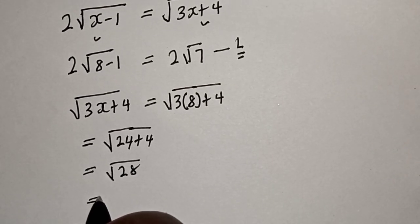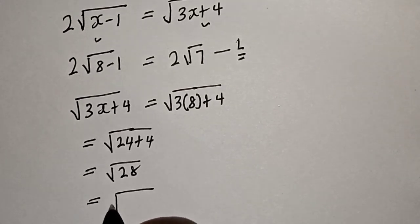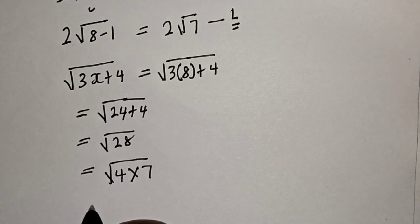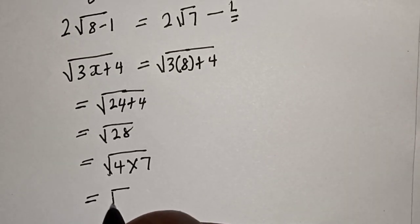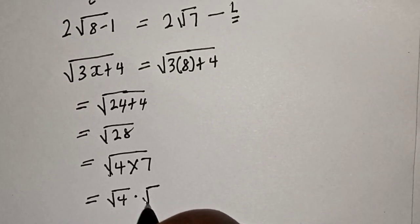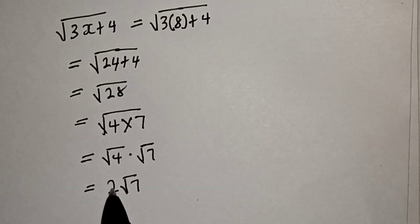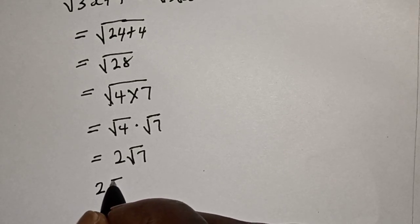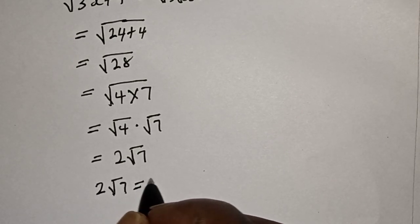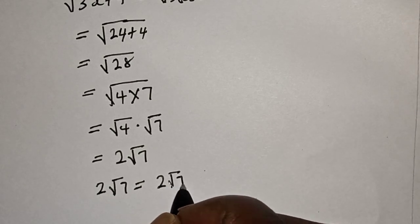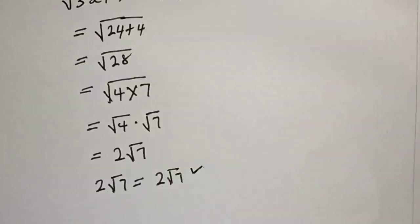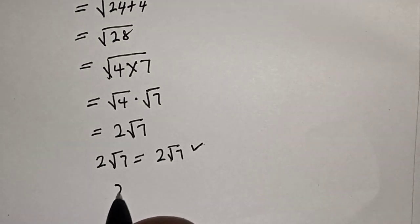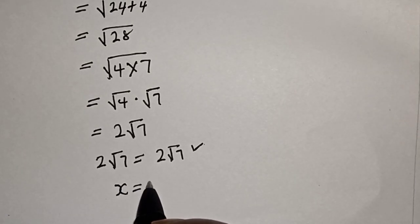Square root of 28 equals square root of 4 times 7, which equals square root of 4 multiplied by square root of 7, giving 2 root 7. Therefore, the left-hand side 2 root 7 is equal to the right-hand side 2 root 7. We satisfy the given equation at s equals 8.